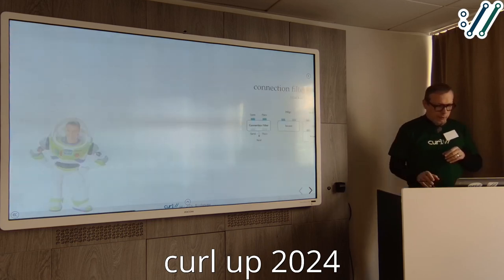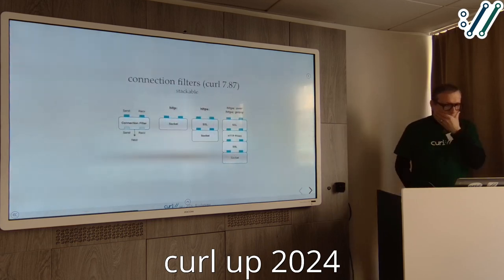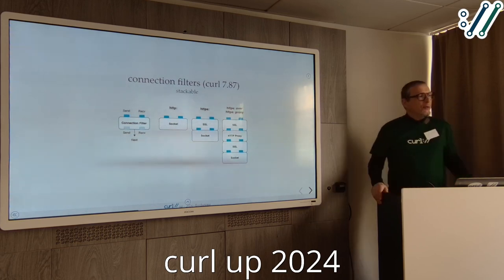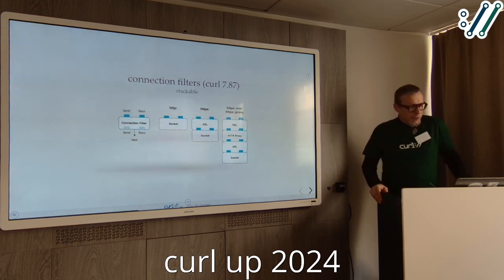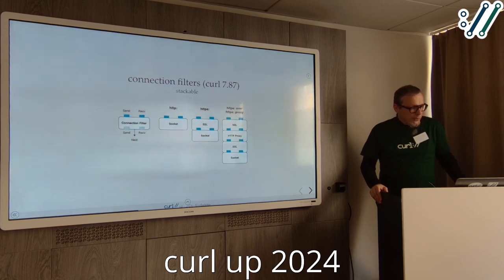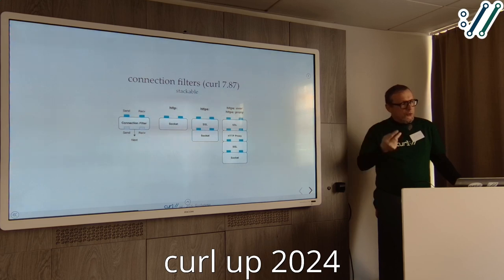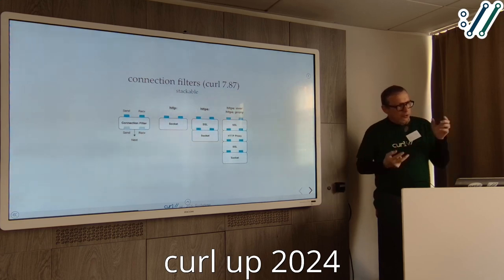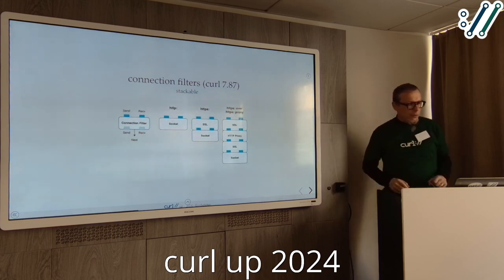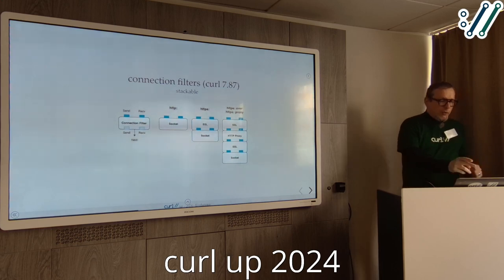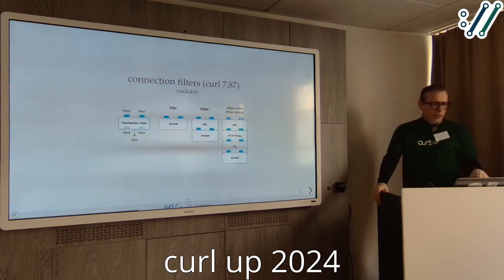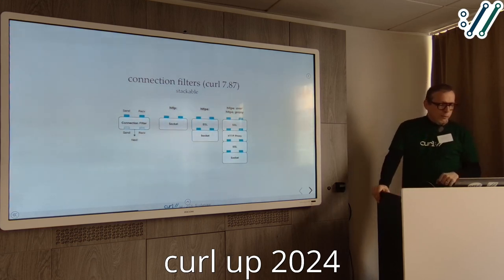Connection filters are basically Lego bricks which have not only the knobs at the top, but also the holes at the bottom so you can stack them. The general connection filter has a send and receive at the top and a send-receive at the bottom as well.